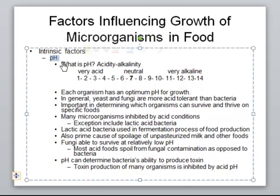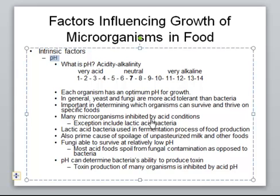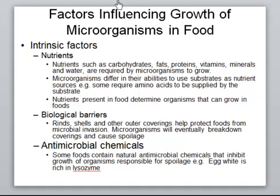Another intrinsic factor is pH. Bacteria cannot grow at acidic or alkaline pH; they grow best near neutral pH. Organisms like fungi can tolerate lower pH. That's why acidic foods — whether in the refrigerator or outside — tend to be spoiled by fungi. For example, oranges have an acidic pH, so bacteria cannot grow in them. What grows in that acidic pH? Fungi. So pH significantly affects the growth of bacteria.